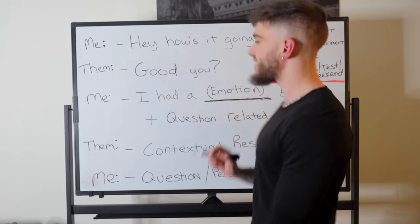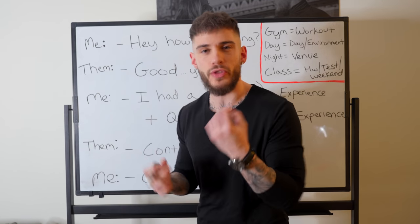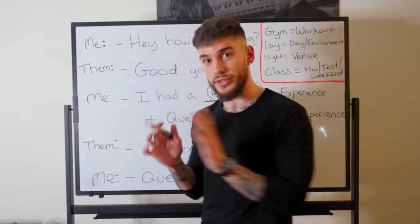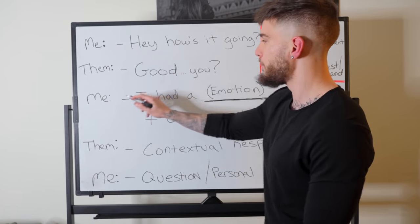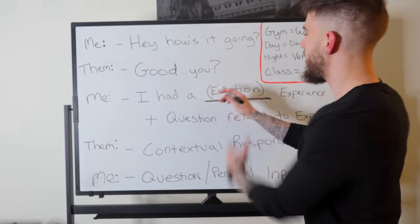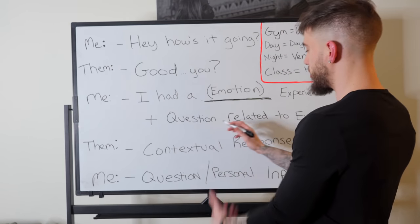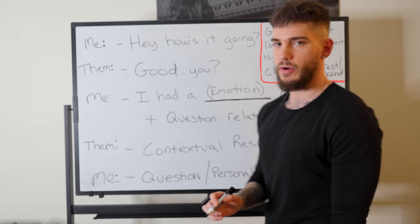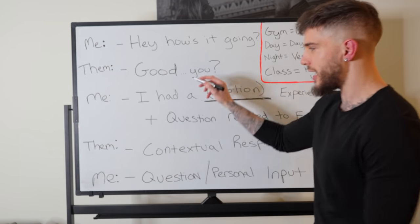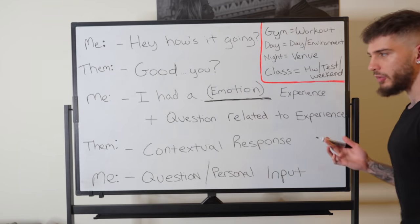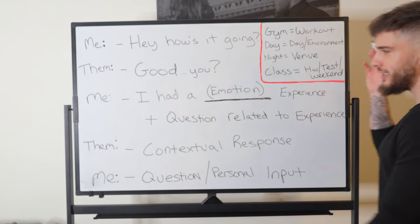Once somebody says 'Good, you,' this is where the power comes in — this is the nugget. If there's one thing you could take away from this, it's this: 'I had a blank experience,' and then you add a question related to that experience. Notice how it says 'emotion' in parentheses. You're going to have some kind of emotional experience, and then ask them a question related to that experience.